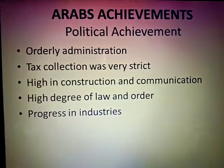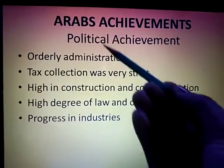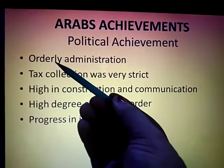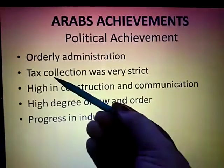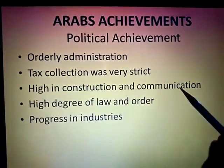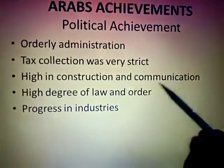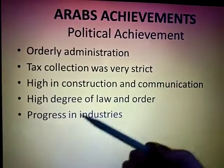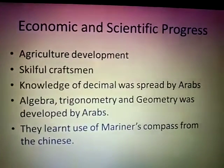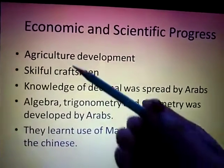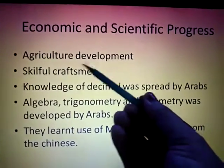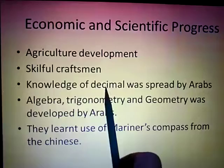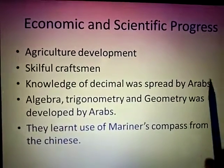During this time they had many achievements. The first was political achievement — they were orderly administered, the collection of tax was very strict, and they had a high communication system with a strong degree of law and order. They also progressed in industries. Scientifically, they developed their agriculture and people were very skillful. The knowledge of decimals was also spread by the Arabs.